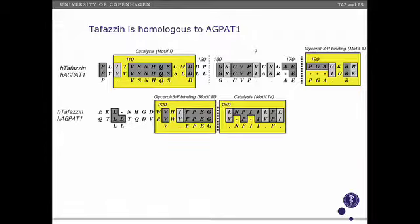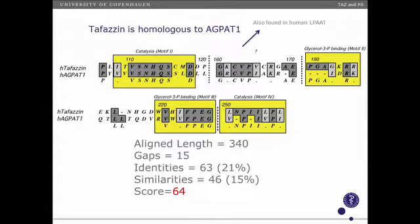Looking at the sequence alignment, you can see the first catalysis motif, some other motifs associated with glycerol-3-phosphate binding, a final catalysis motif, and another motif that's less well understood. Overall you get about 21% identical amino acids and about 15% similarity, for an overall reasonable homology.